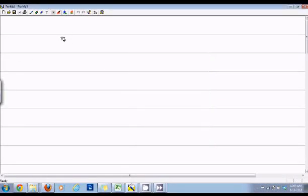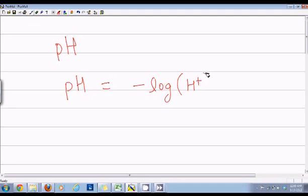Hi everyone, in this tutorial we will talk about pH and how to calculate the pH of water. So what is pH? pH is equal to negative log of concentration of H+ ions in the solution.